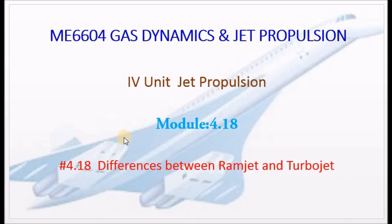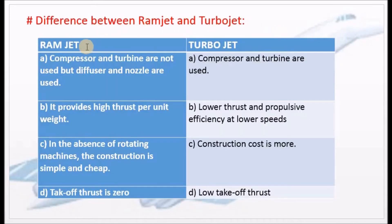Ramjet and Turbojet are different. This topic is usually a 4–6 mark or 12 mark question. In a Ramjet, a compressor and turbine are not used — only a diffuser and nozzle are used. In a Turbojet, the compressor and turbine are used along with diffuser and nozzles. Ramjet uses supersonic and subsonic diffusers.